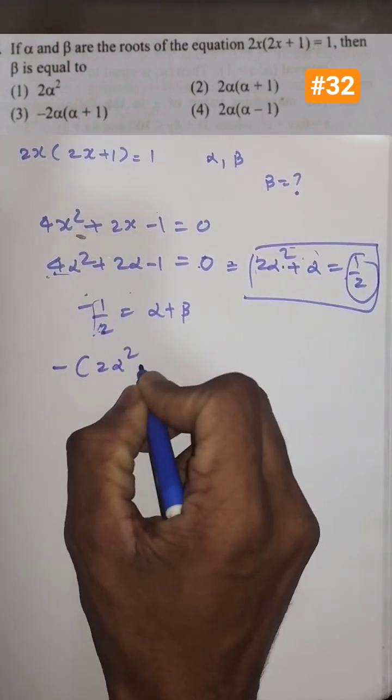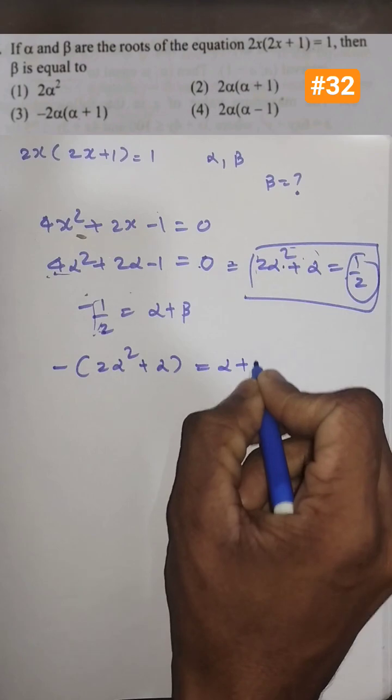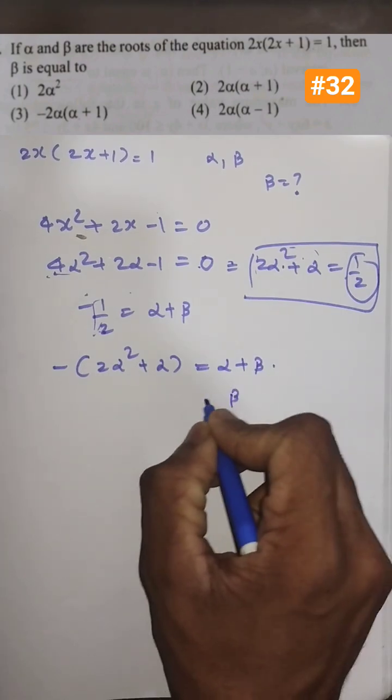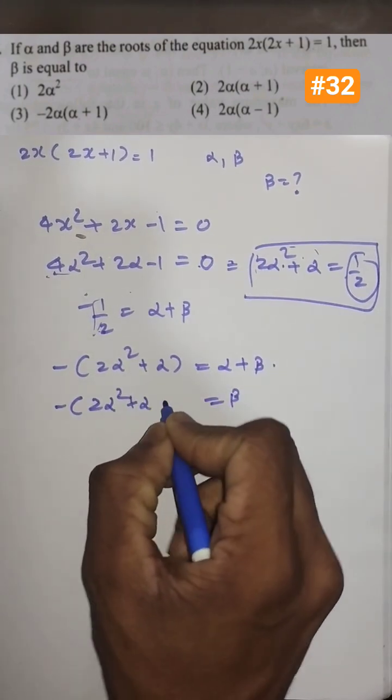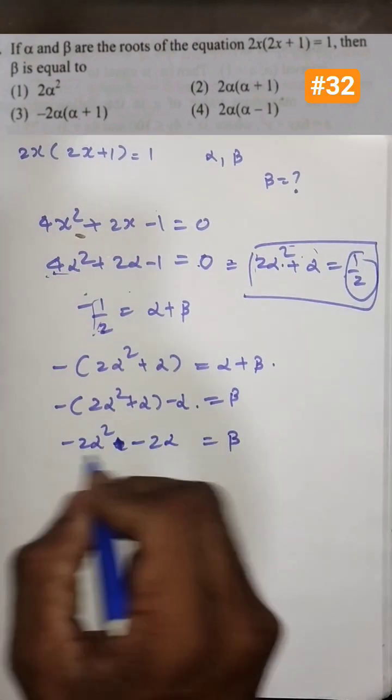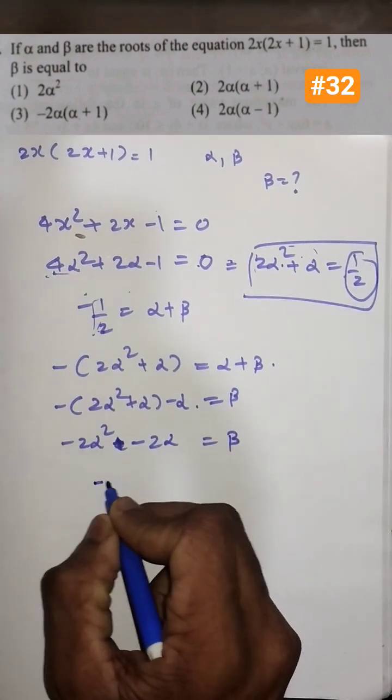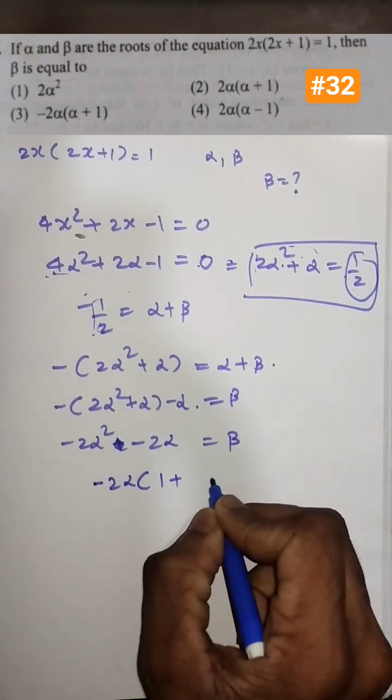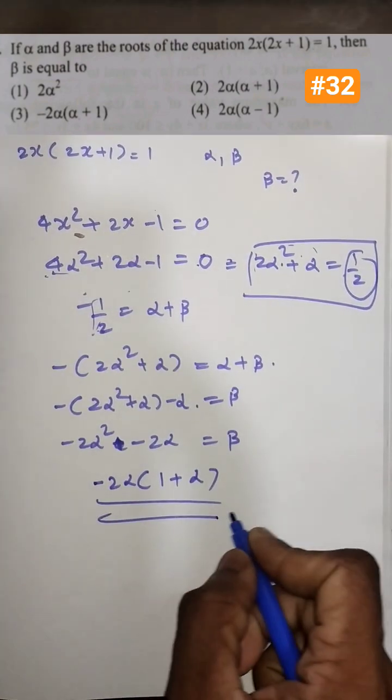So I'll be getting minus of 2 alpha square plus alpha equal to alpha plus beta. And from this we can say that beta equal to minus of 2 alpha square plus alpha minus alpha. And I can take 2 alpha out. So minus 2 alpha into 1 plus alpha. That is option number 3.